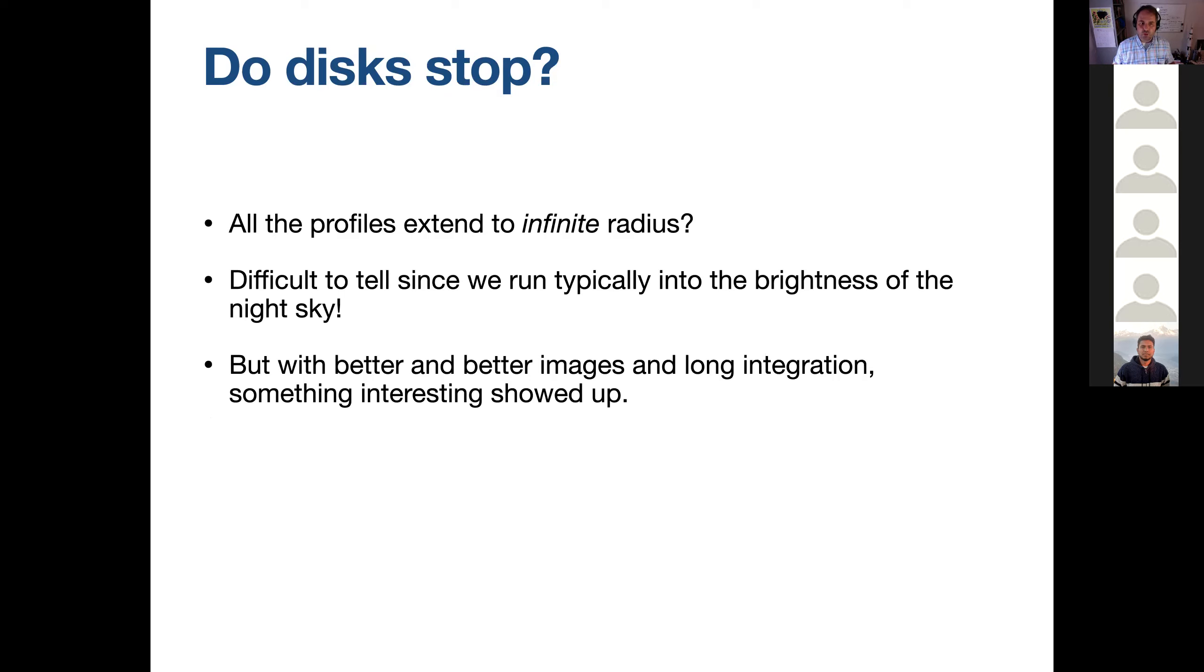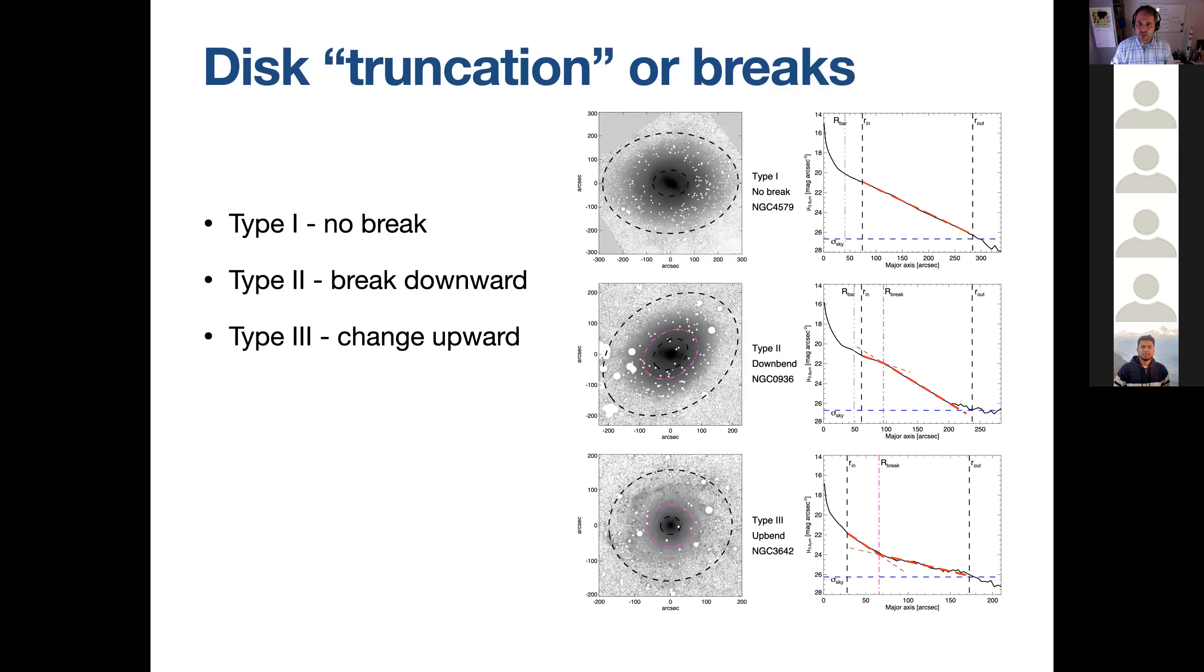The last question I want to do is do disks actually stop? Well, are they infinite? No, they do stop. But we typically run into the brightness, the underlying brightness of the night sky before we know that the galaxy actually stops. With better and deeper images and better sky subtraction, we can actually go further and they never seem to quite stop, but they do break. So there is, for example, exponential profiles for disks that don't break. There are ones that break and actually become steeper and there are ones that become shallower. And so as is typical for astronomers, we call them type one, two and three. Again, not very descriptive, but truncation, disks do seem.